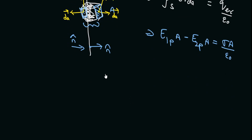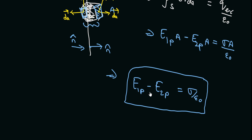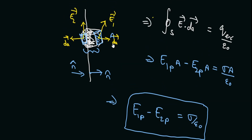Therefore, E1-perpendicular minus E2-perpendicular equals sigma divided by epsilon naught. The perpendicular components of the electric field undergo a discontinuity across the surface charge density, and the amount by which they are discontinuous is sigma divided by epsilon naught. It is only the components perpendicular to the surface that are discontinuous.